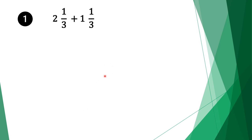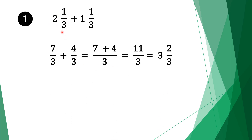What we do is multiply the denominator by the whole number and add with the numerator. So 3 times 2 is 6, plus 1 is 7. We write 7 on the numerator and bring the 3 down as the denominator. Move along the plus sign, then do the same thing for the second fraction: 3 times 1 is 3, plus 1 is 4, and bring the denominator down.